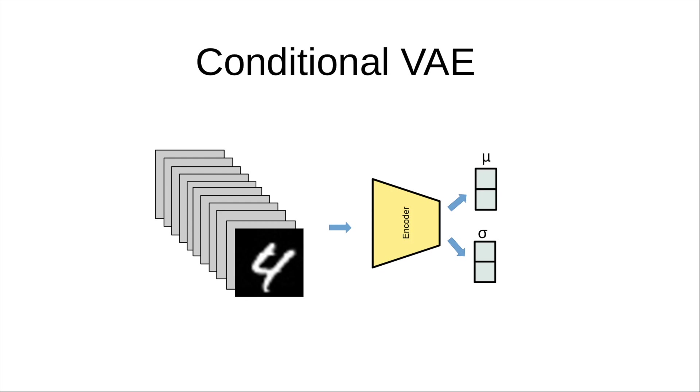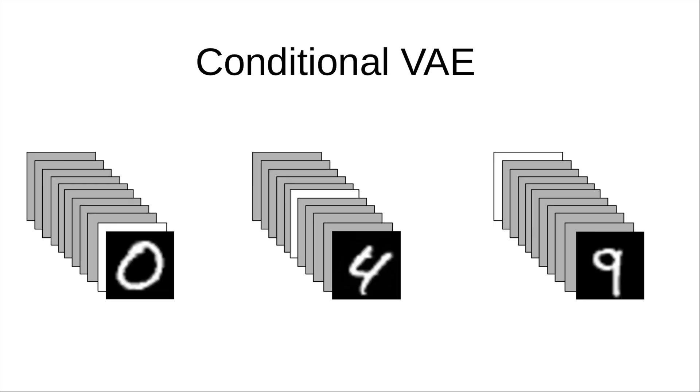For our conditional encoder, since we are working with digits, our number of classes are 10. So we'll add 10 channels to the input image with all being 0. Then we'll replace the label index channel with all 1s. So for 0, it'll be the first channel, for number 4, it'll be the 5th channel, and for number 9, it'll be the 10th channel.